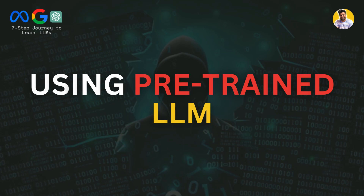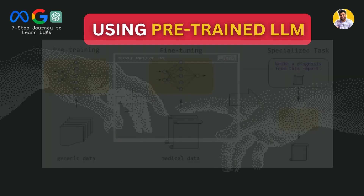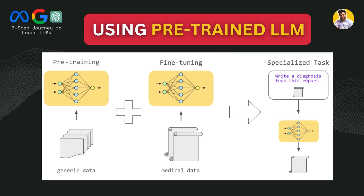Pre-trained models are the bedrock on which large language models are built. These pre-trained models are already trained on a large corpus of textual data and have the ability to generate text, do machine translation, question answering, and more. If you have a model and data, you can do tokenization on that data and then train a pre-trained model and fine-tune it on your specific task — for example, only for language translation.